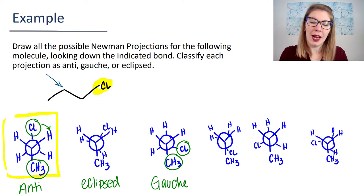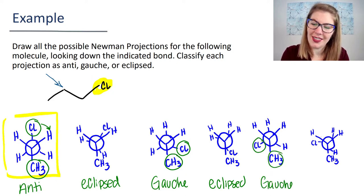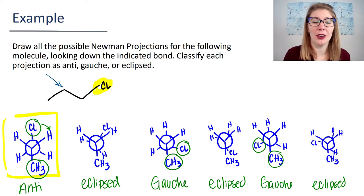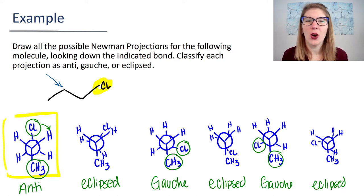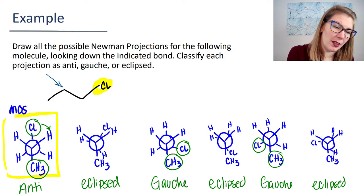And we continue this pattern—hitting eclipsed next, then gauche again, then eclipsed one more time. If we wanted to identify which conformation is our lowest energy or highest energy, your anti-conformation is always going to be your most stable. Remember that most stable means lowest energy.